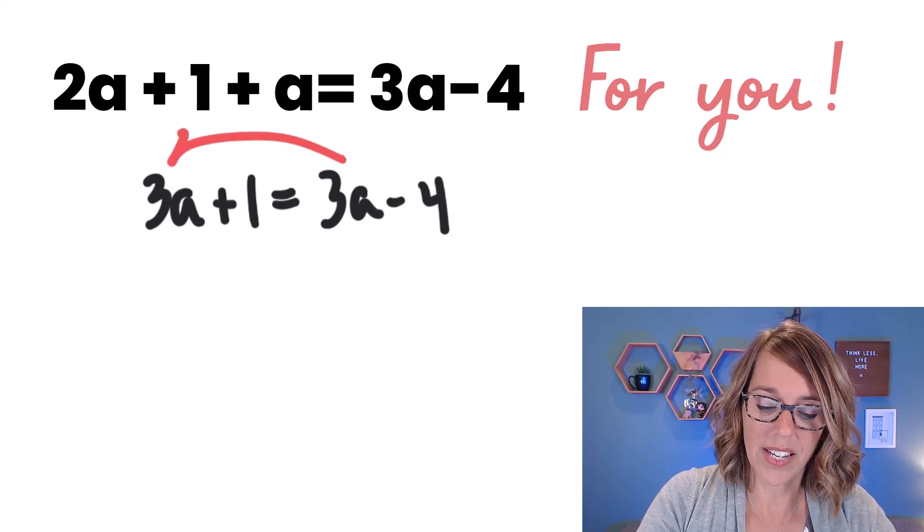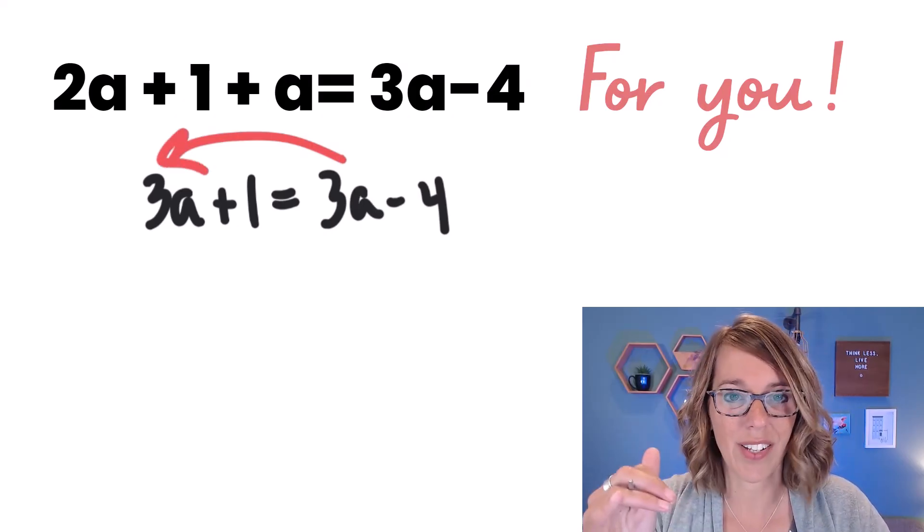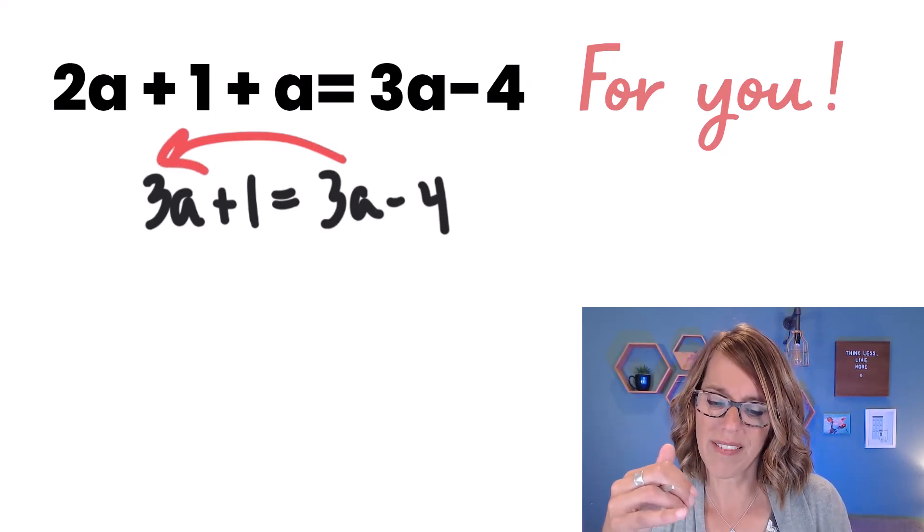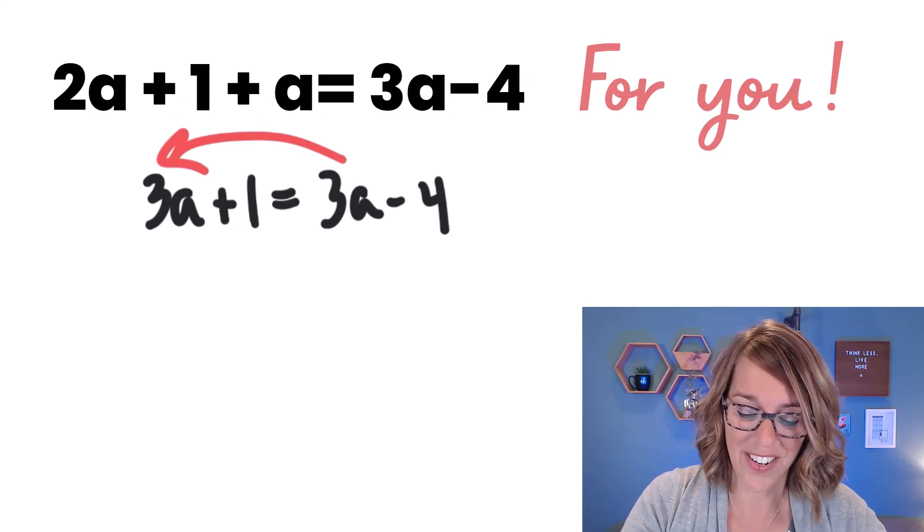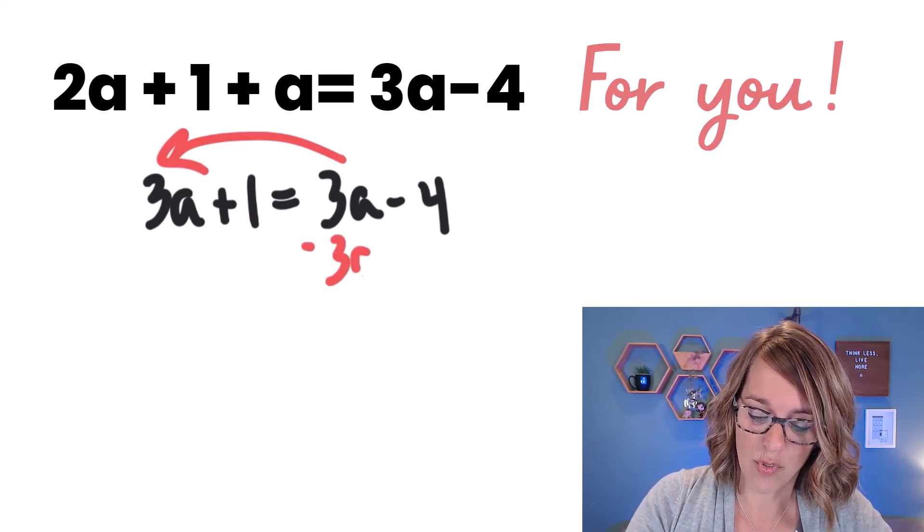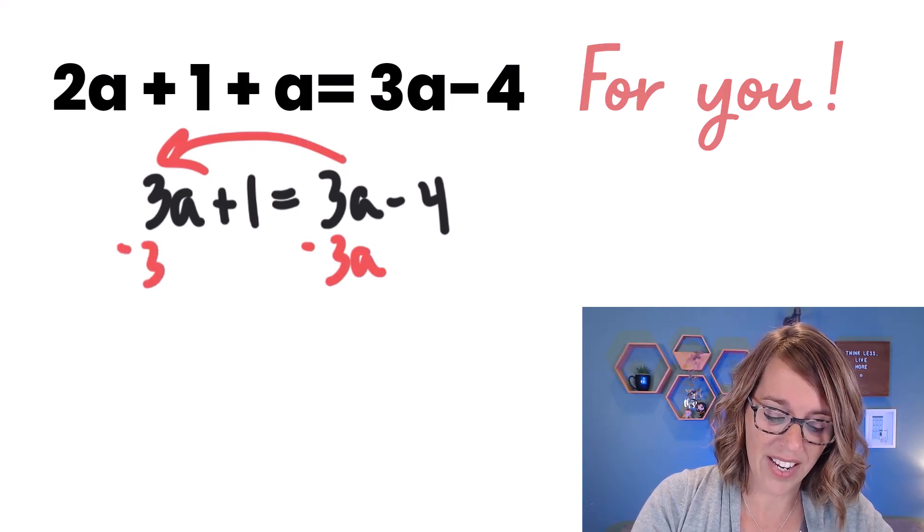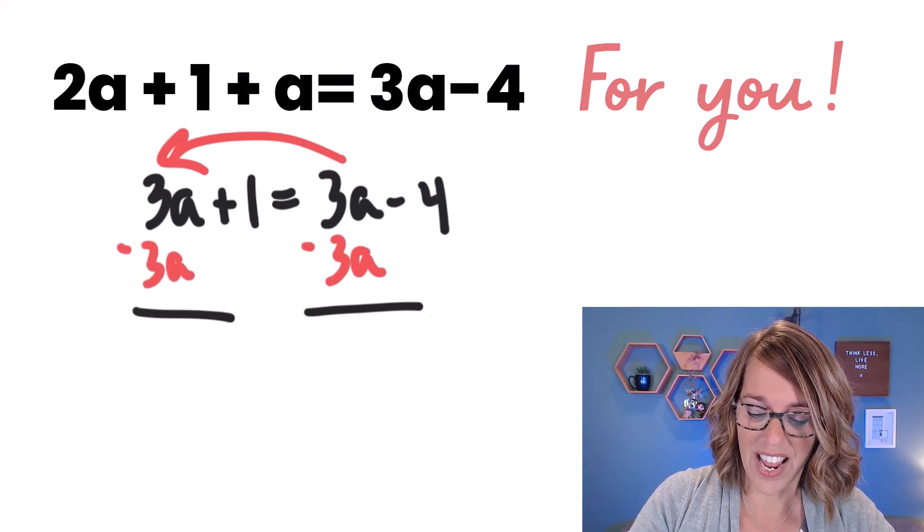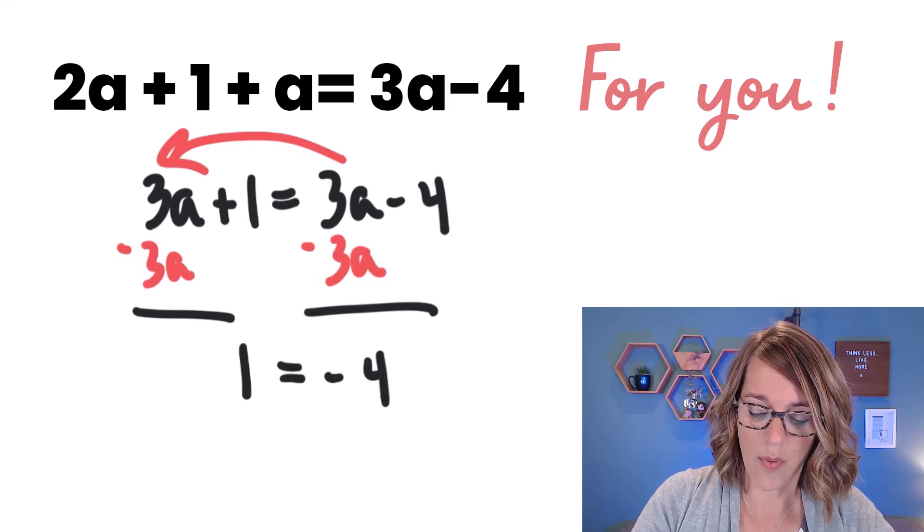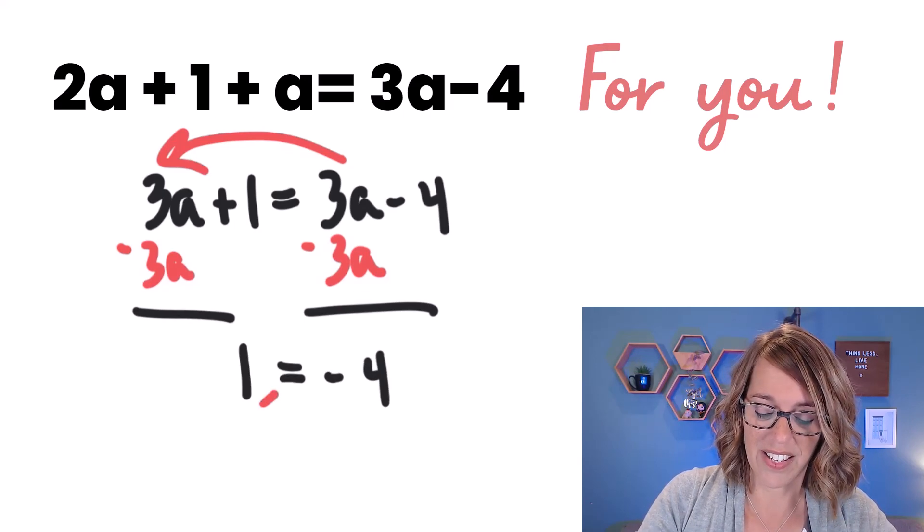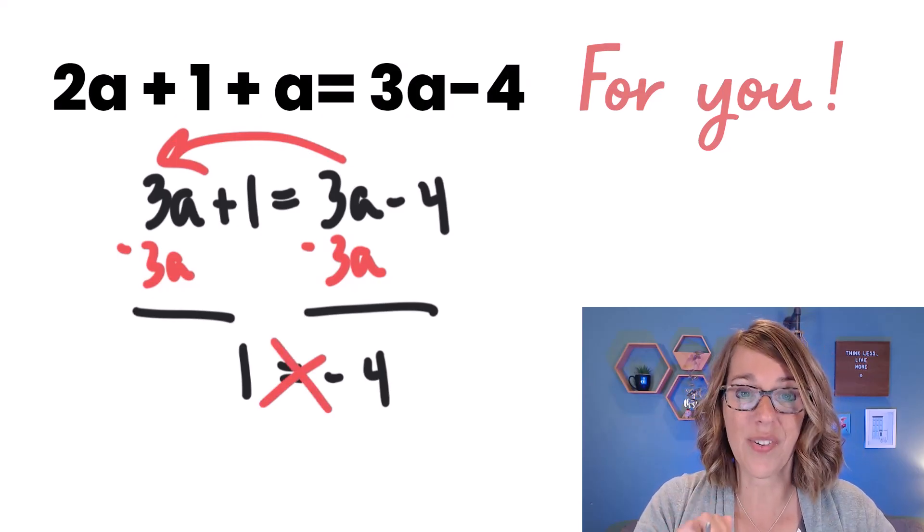Now I'm going to attempt to get my a's together. But if you take a look at this, 3a plus 1, 3a minus 4, you're never going to get the same answer. But let's go ahead and try anyway. I'm going to subtract that 3a from both sides. As I do the math there, I end up with just a 1 on the left and a negative 4 on the right. This is a false equation.